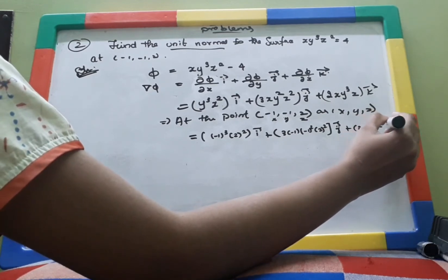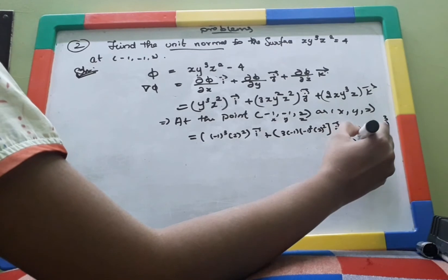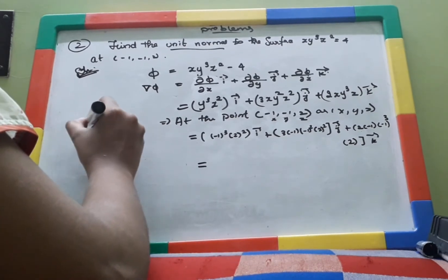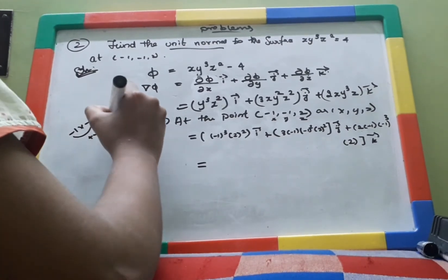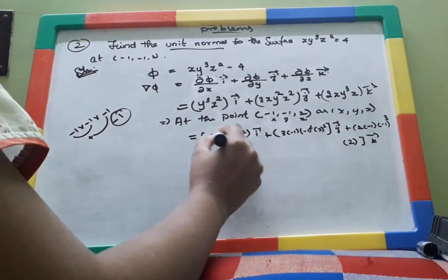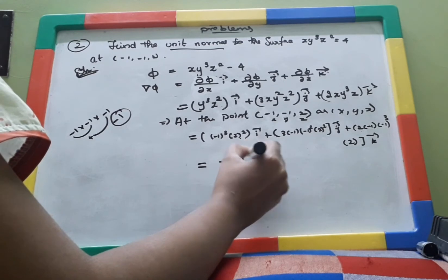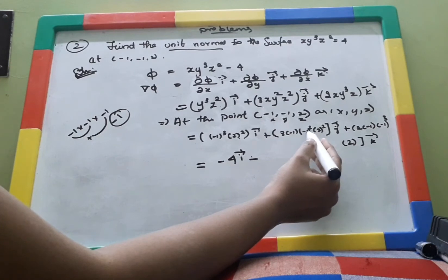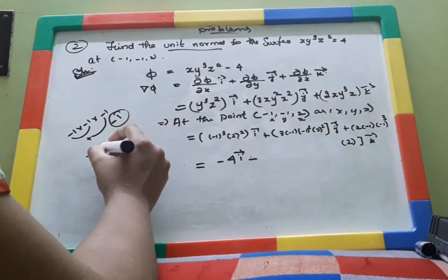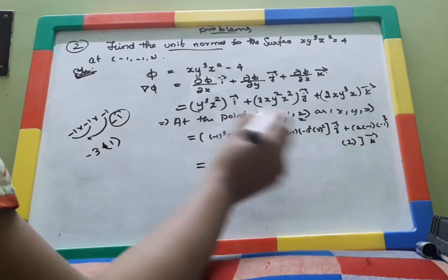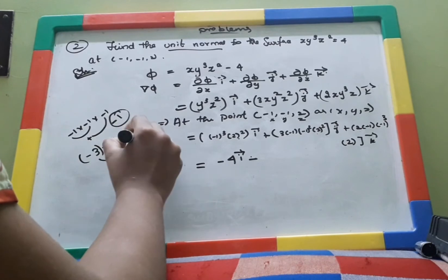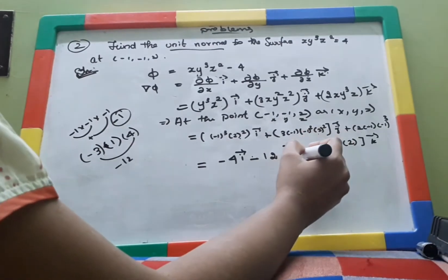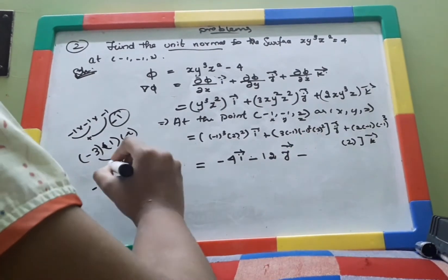Solving the î component: (−1)² = 1, 2² = 4, so it gives −4î. For the ĵ component: 3 × (−1) = −3, (−1)² = 1, 2² = 4, so −3 × 4 = −12, giving −12ĵ.